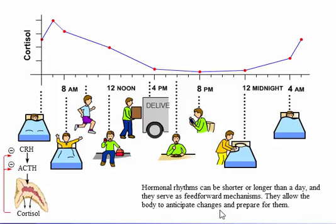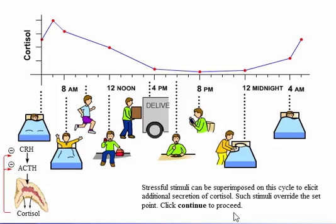Hormonal rhythms can be shorter or longer than a day, and they serve as feed-forward mechanisms. They allow the body to anticipate changes and prepare for them. Stressful stimuli can be superimposed on this cycle to elicit additional secretion of cortisol. Such stimuli override the set point.